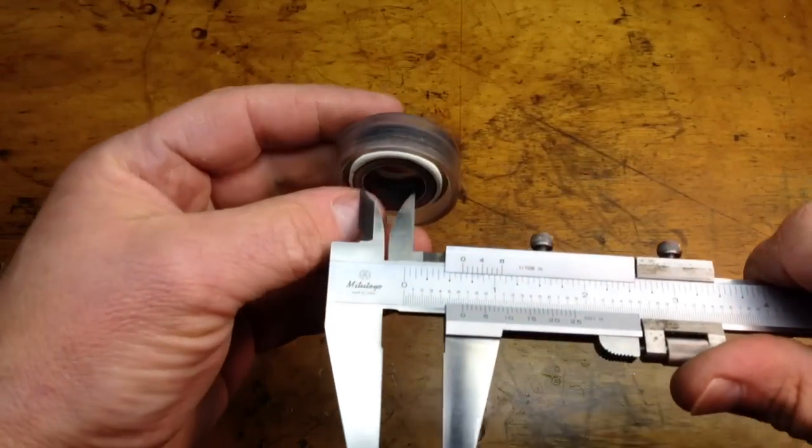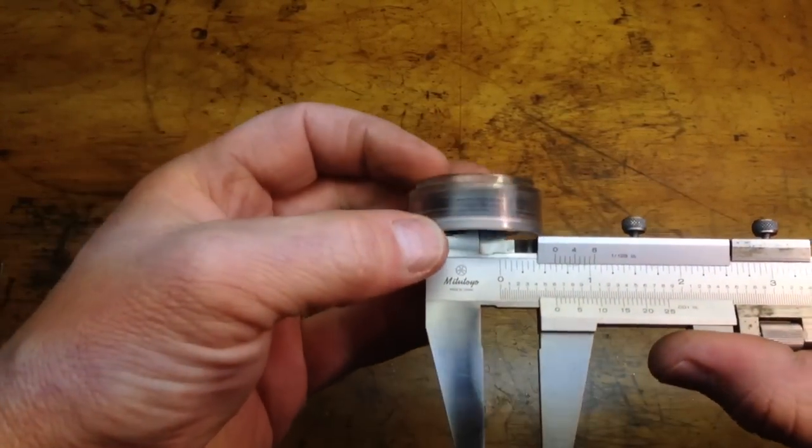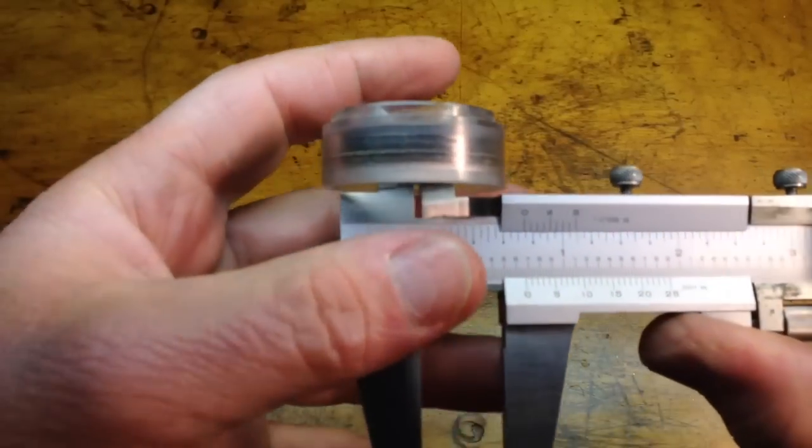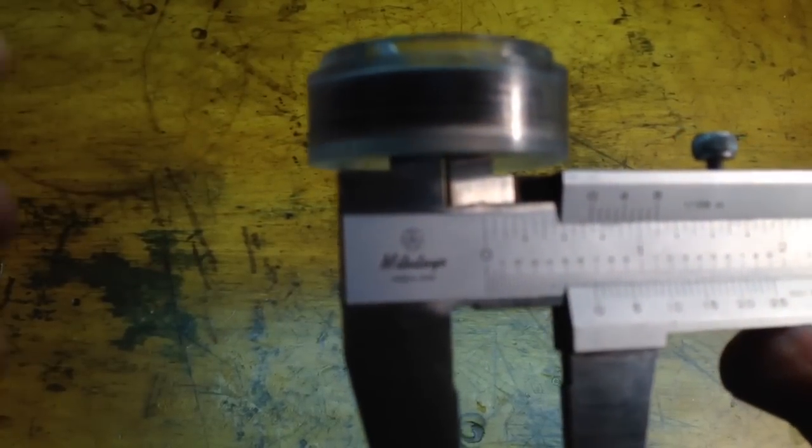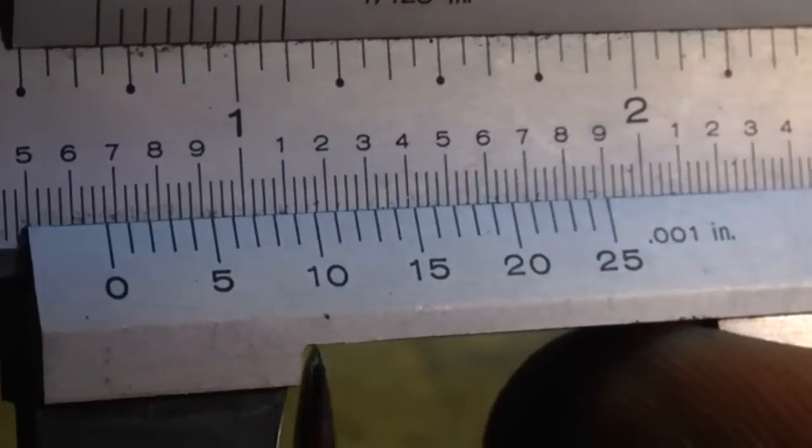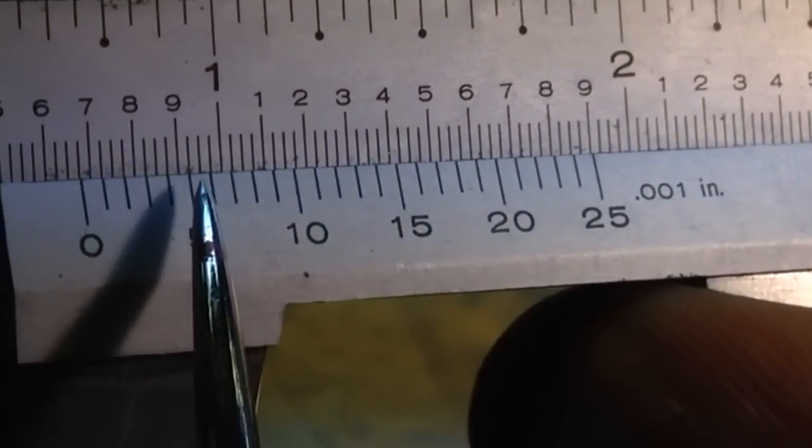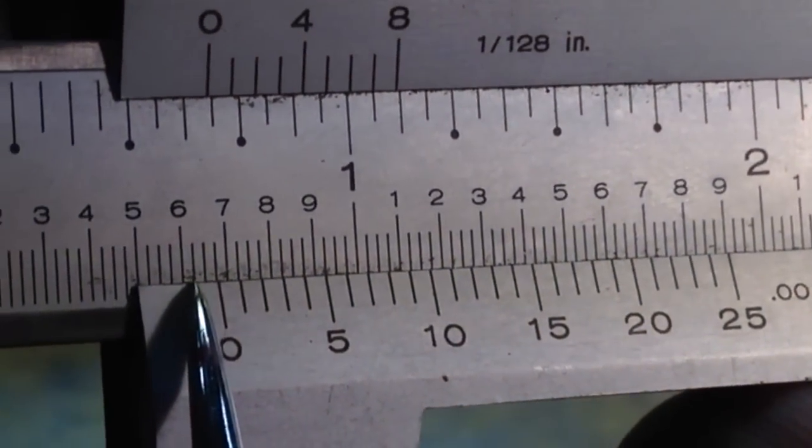So now we're going to do an internal measurement using our vernier calipers, and we stick that inside the bearing here, slide it out, and you can see that it comes up just past .6, and it's past the second mark.